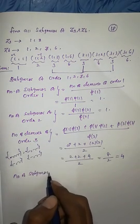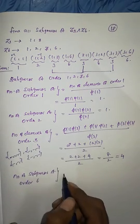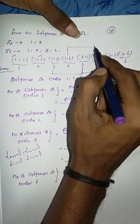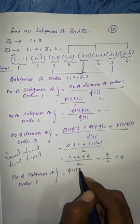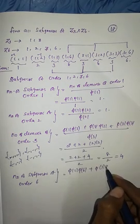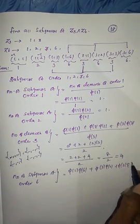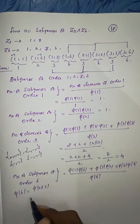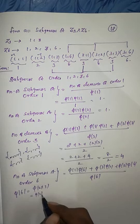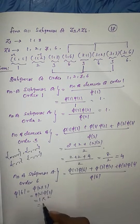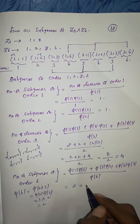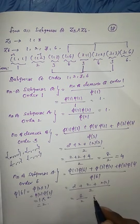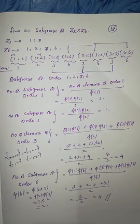Number of subgroups of order 6: three pairs have LCM 6 — (1,6), (3,2), (3,6). The formula is φ(1)φ(6) + φ(3)φ(2) + φ(3)φ(6), all divided by φ(6). Since φ(6) = φ(2)·φ(3) = 1·2 = 2, this gives 2 + 2 + 2·2 = 8, divided by 2 = 4. So there are 4 subgroups of order 6. This is how to calculate the number of subgroups for Zn cross Zm.